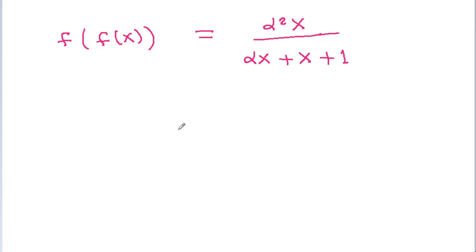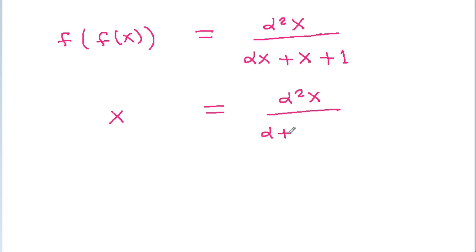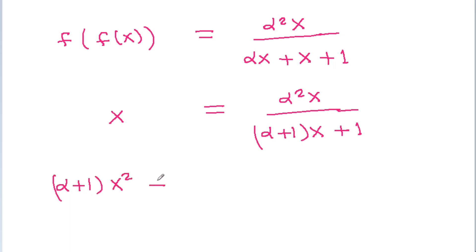And we have given that f of f(x) is equal to x, so x will equal alpha squared x divided by (alpha plus 1)x plus 1. If we cross multiply, then (alpha plus 1)x squared plus x will be equal to alpha squared x.